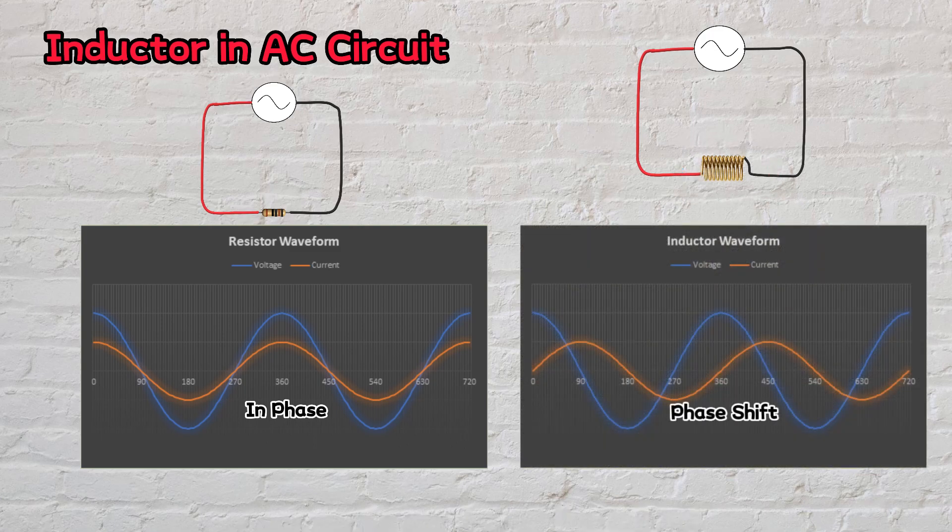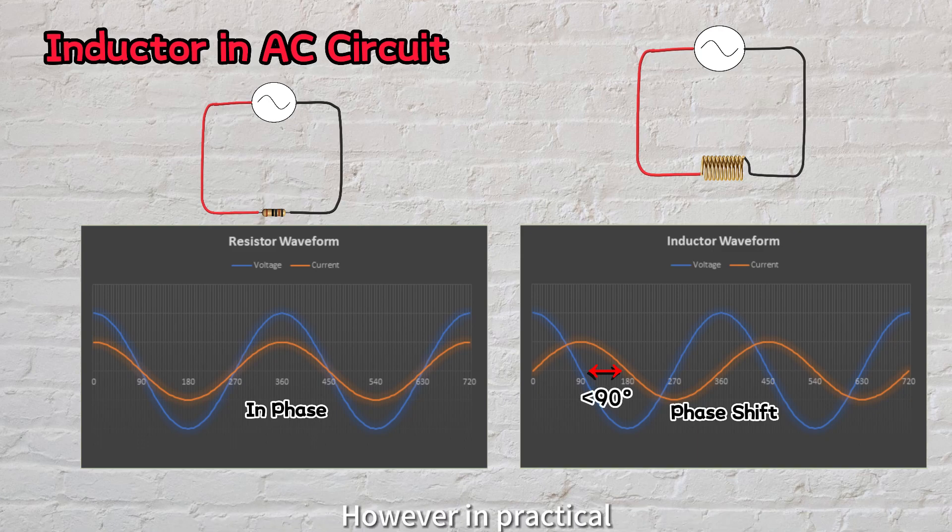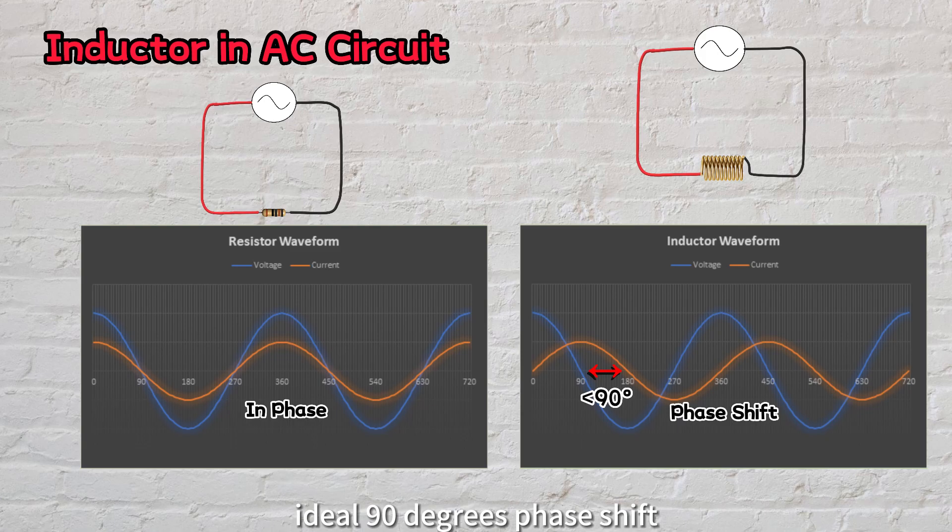As a result, we notice a phase shift between the voltage and current waveforms. In a pure inductive circuit, the current lags 90 degrees behind the voltage. However, in practice, there may be slightly lower than the ideal 90 degrees phase shift due to the presence of resistance in wire coils.